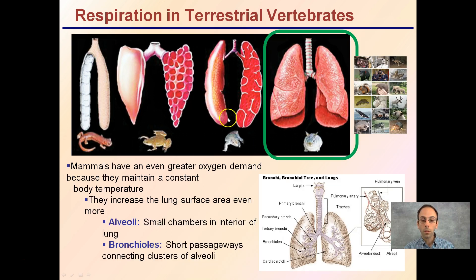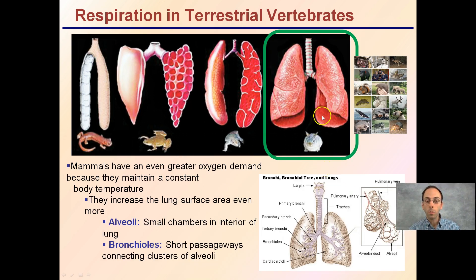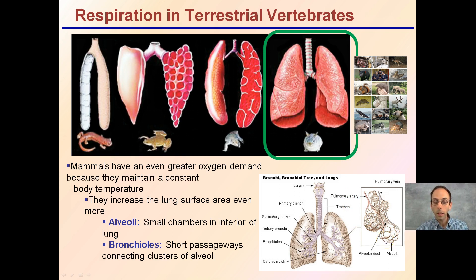Lastly, our mammals. We have an even greater oxygen demand than reptiles or amphibians, mainly because we maintain a constant body temperature, which requires our cells to be very active. We increase our surface area even more through two specialized structures. The alveoli are small chambers in the interior of the lung — they're like grape-like structures. The bronchioles are short passageways that connect clusters of these alveoli. This vastly increases the surface area in our lungs, allowing a very efficient transfer of oxygen and carbon dioxide so that our cells can respire at a great rate and we're able to maintain homeostasis.